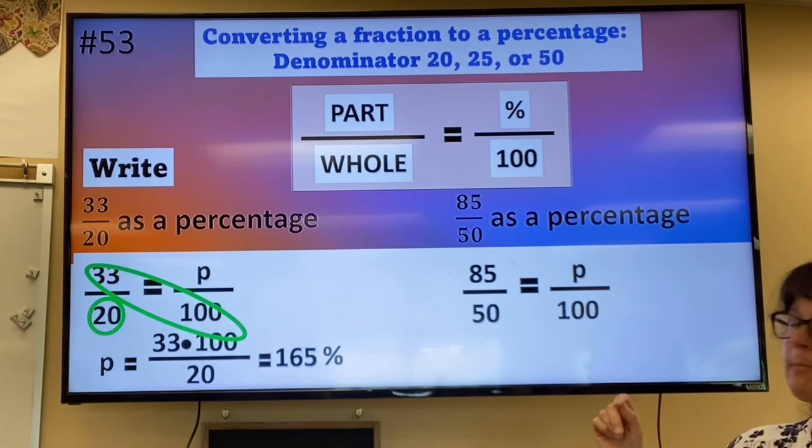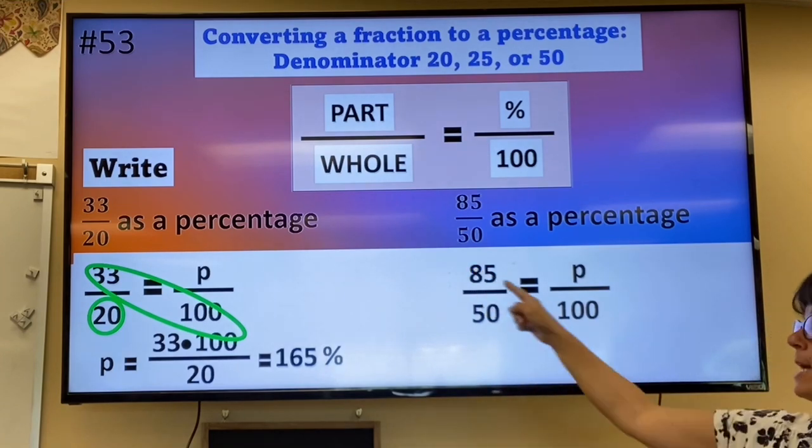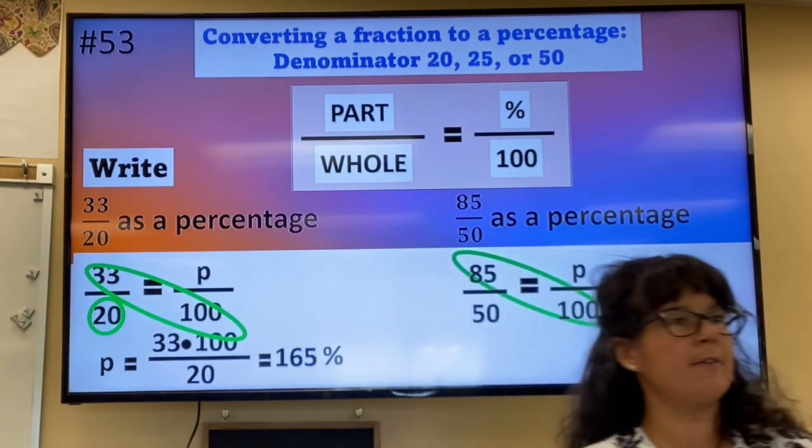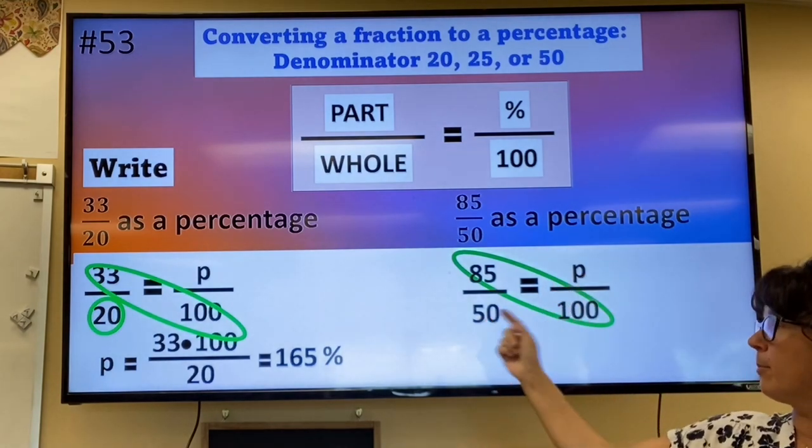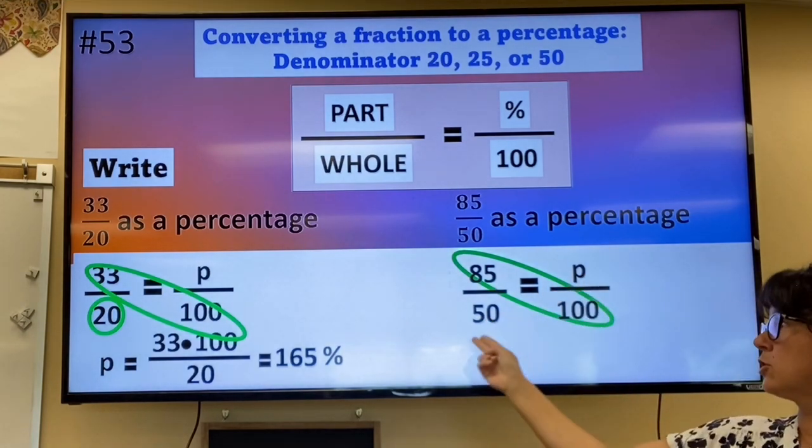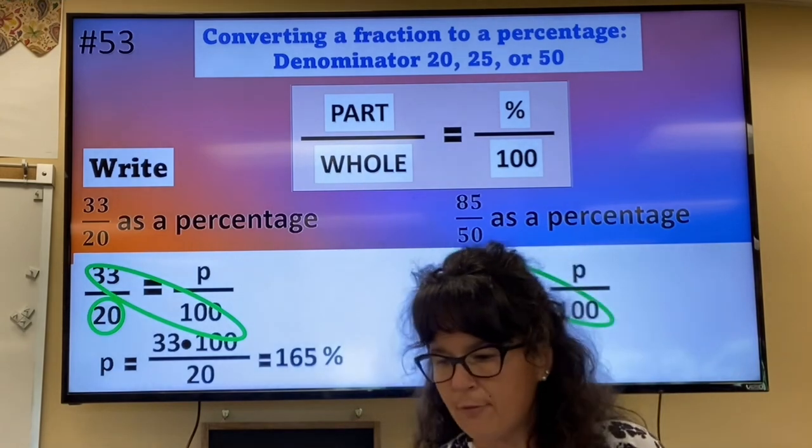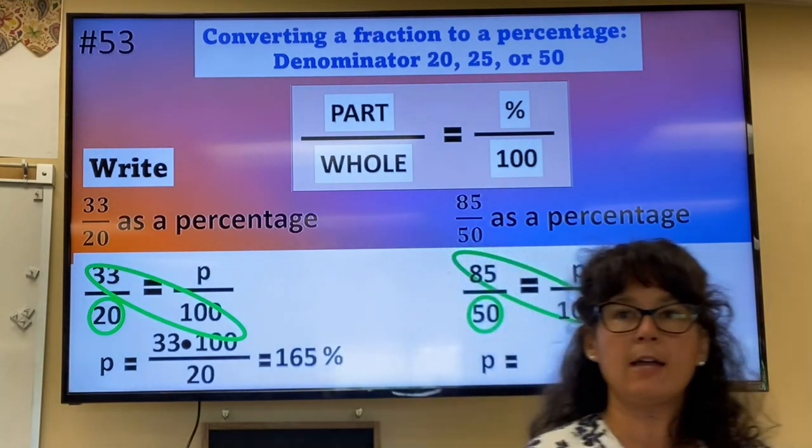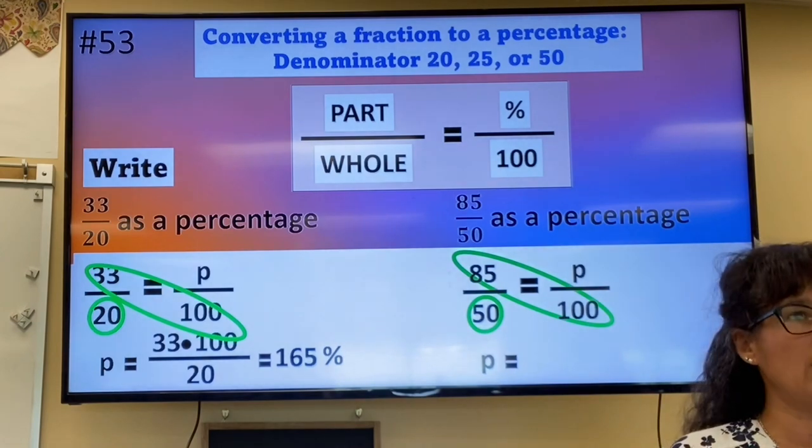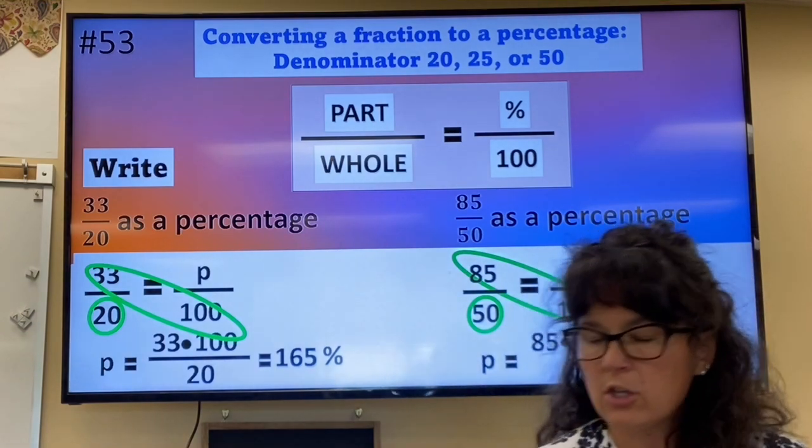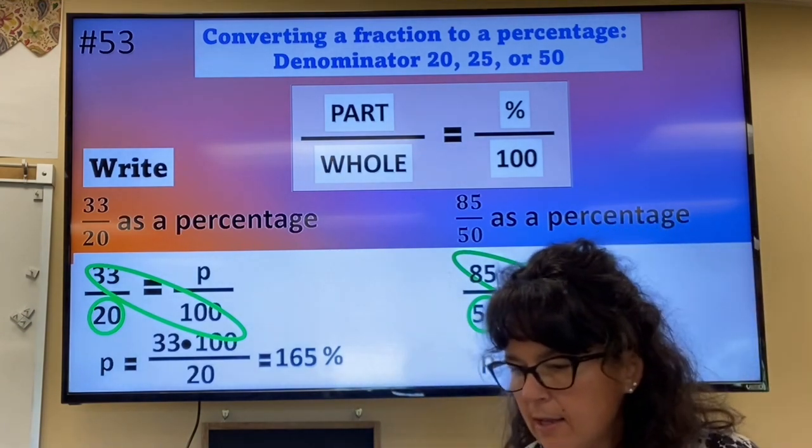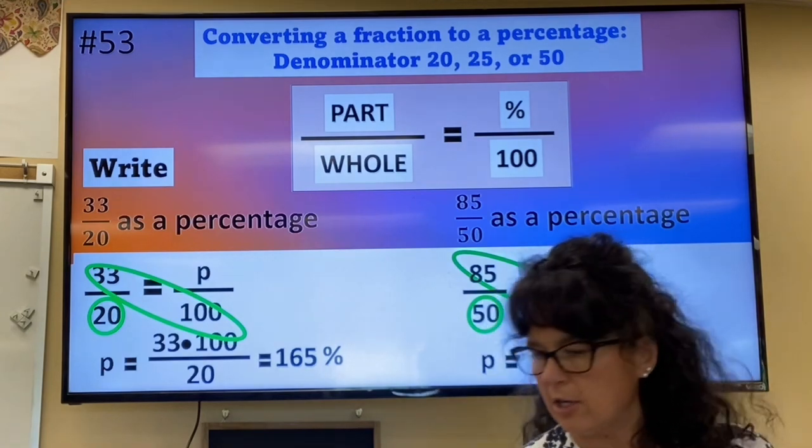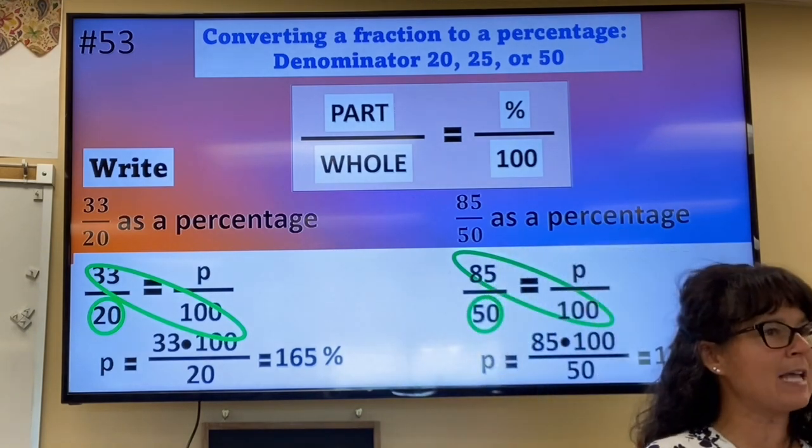So the numbers that I'm going to multiply are the ones that are diagonal. So 85 and 100. And then divide by the number across diagonal to the unknown. So divide by 50. So if you grab your calculator and take 85 multiplied by 100, and then you divide by 50, you're going to end up getting 170.